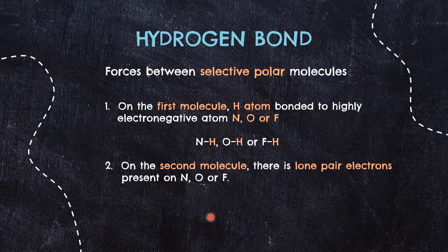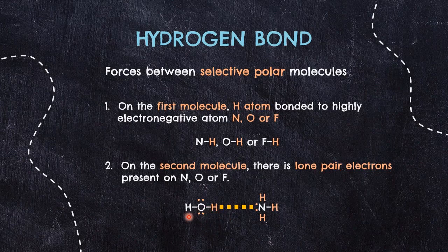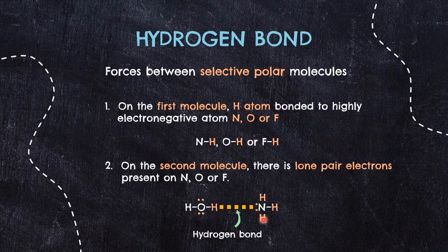For a quick summary of how to apply these requirements: if the first molecule is water — with hydrogen attached to oxygen — and the second molecule is ammonia, which has a lone pair on nitrogen, then they will form interactions between the hydrogen and the lone pair called a hydrogen bond. These interactions are especially strong due to the electronegative atoms of oxygen and nitrogen.